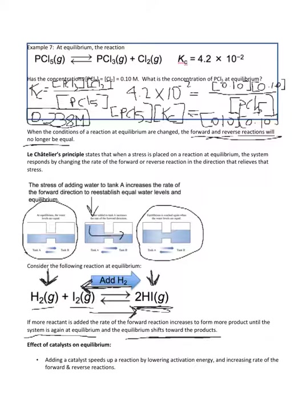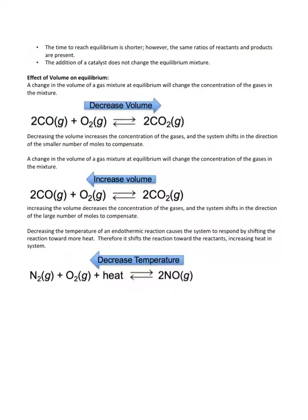What happens if you add a catalyst? Adding a catalyst speeds up a reaction by lowering the activation energy and increasing the rate of both the forward and the reverse reaction. So the time to reach equilibrium is shorter, but the ratios of reactants and products are not affected. The addition of a catalyst does not change the equilibrium mixture — it changes the speed. Remember that Kc doesn't tell you anything about the speed.